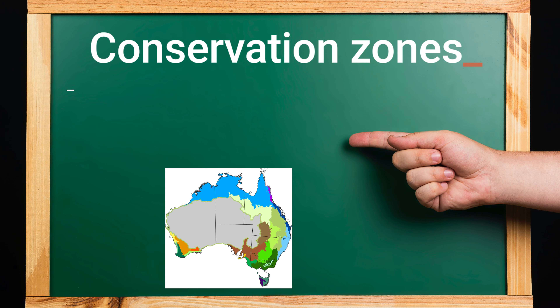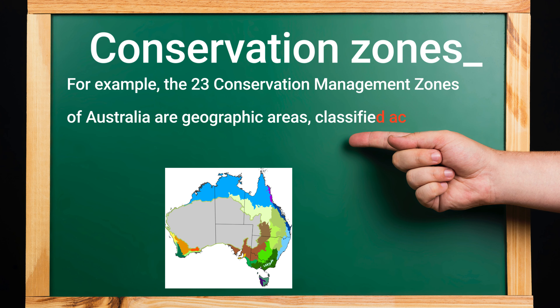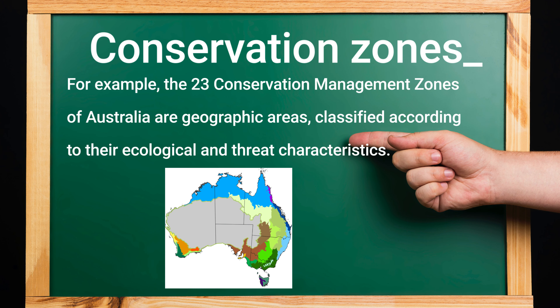Conservation zones. For example, the 23 conservation management zones of Australia are geographic areas classified according to their ecological and threat characteristics.